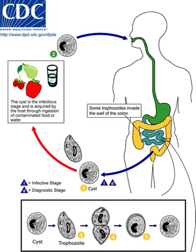The opposite of the trophozoite state is the thick-walled cyst form. Trophozoite and cyst stages are shown in the life cycle of Ballantidium coli, the causative agent of Ballantidiasis.